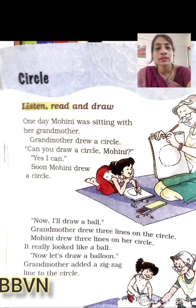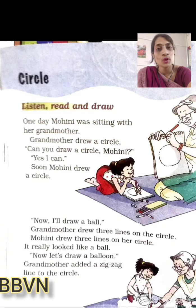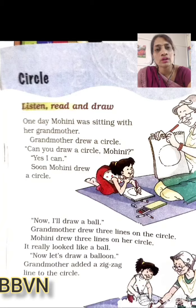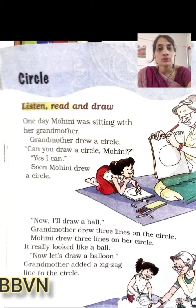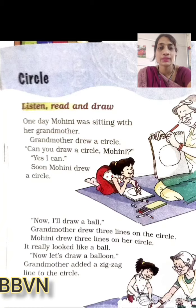Next kya hua? Now I will draw a ball. Grandmother ne kaha ki ab main ek ball banane waali hoon. Grandmother drew three lines on the circle. Grandmother ne ball ke upar three lines bana di. Mohini drew three lines on her circle. Now Mohini ne jo circle banaya tha, usne bhi uspe three lines bana li. It really looked like a ball. So aap bhi try karna — pehle ek circle banana hai, phir ball ke andar three lines banani hai. Toh woh ek dam aapko ball jaisa lagega.